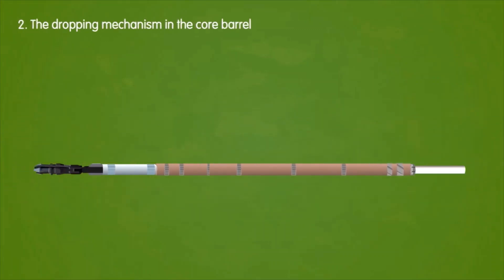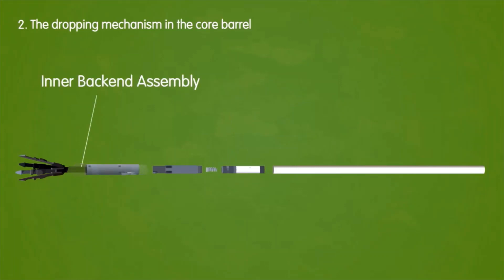The dropping mechanism in the core barrel. The dropping mechanism is made up of three chrome threaded bars, a dump valve and an inner back end assembly with a quad latch retriever system.